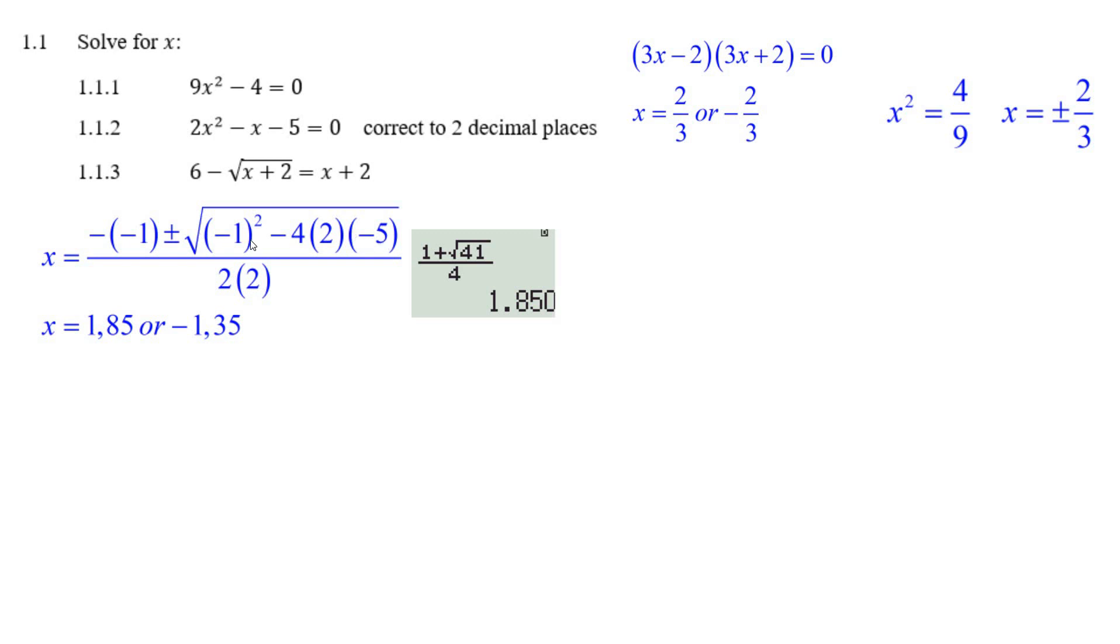Put that in your calculator. That works out to be 40. That's 1 plus 40, it's 41. And 1 plus root 41 divided by 4 is 1.85. And if you change that to a minus, you get negative 1.35.